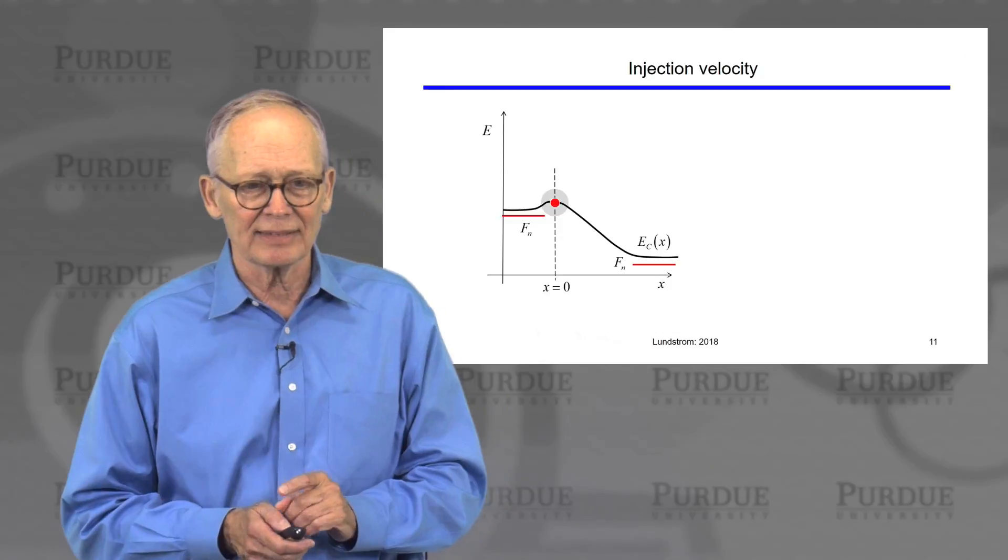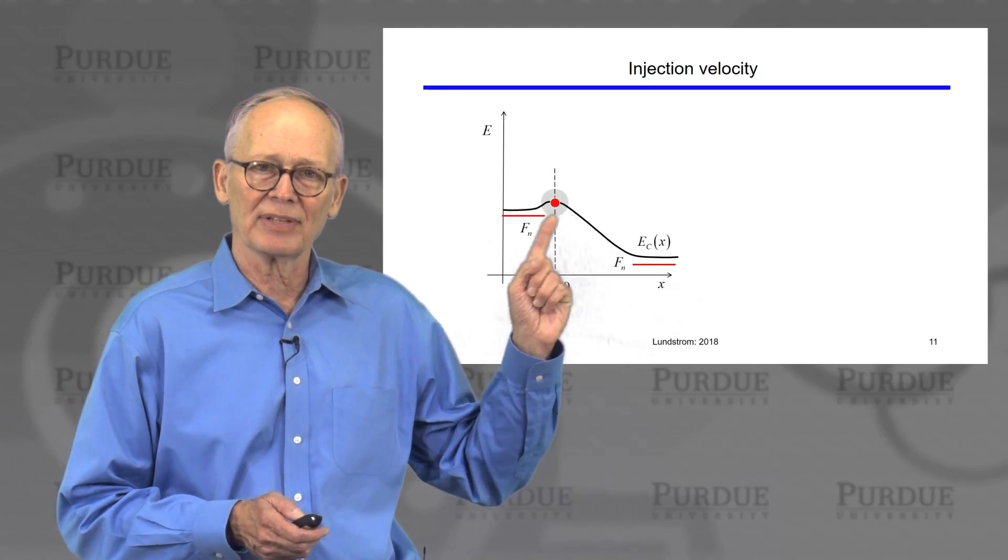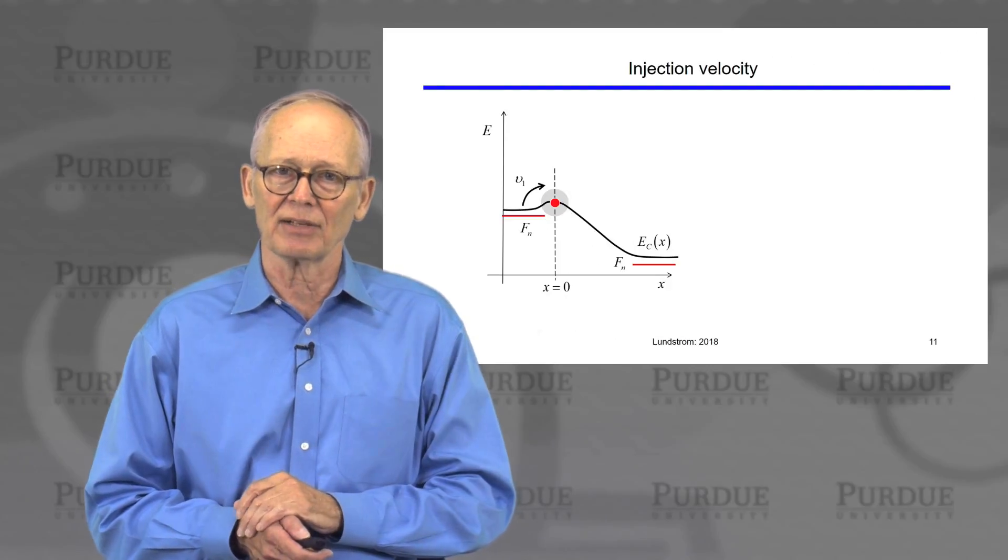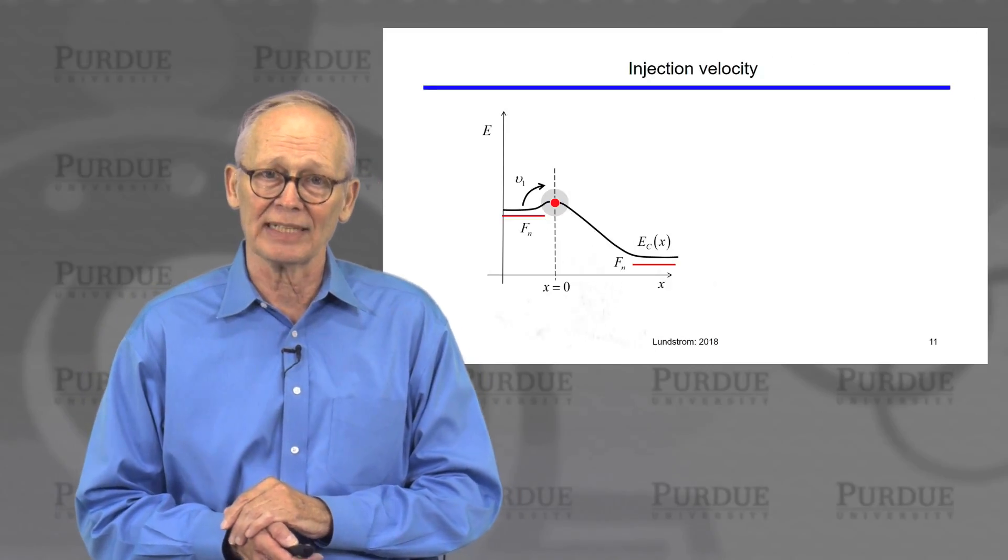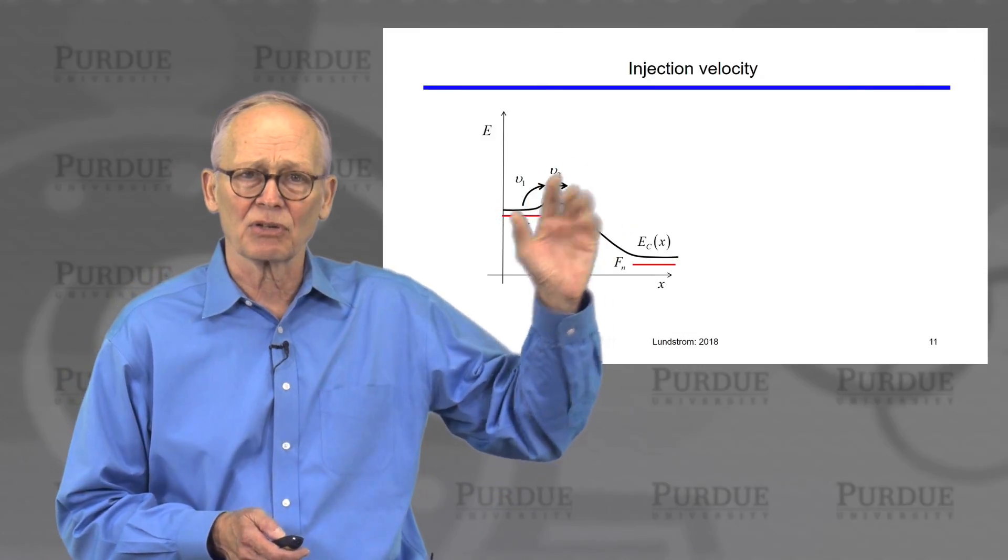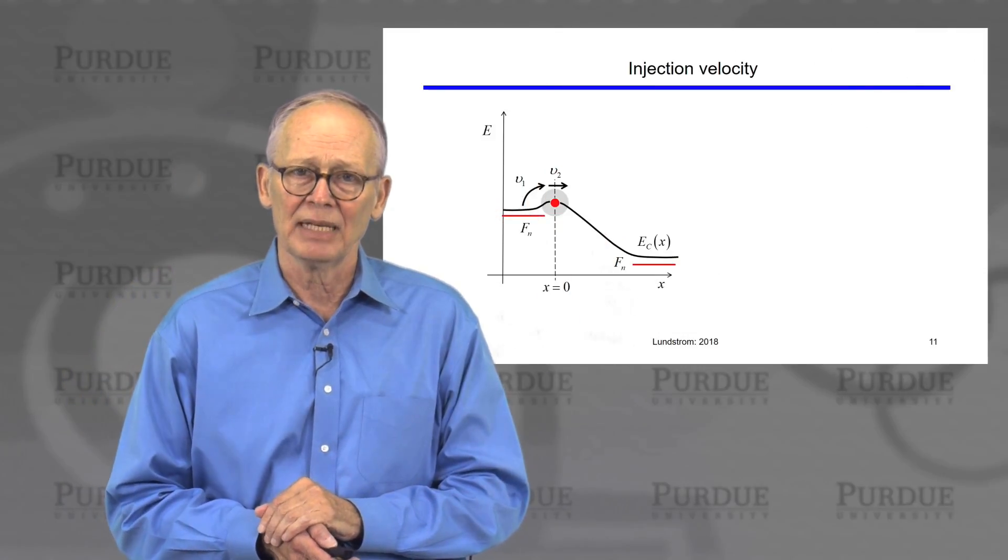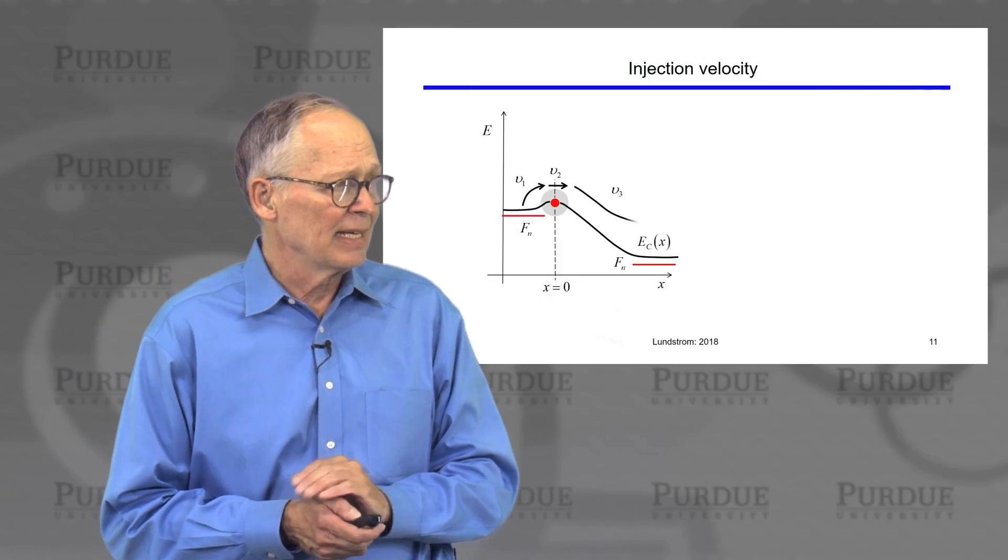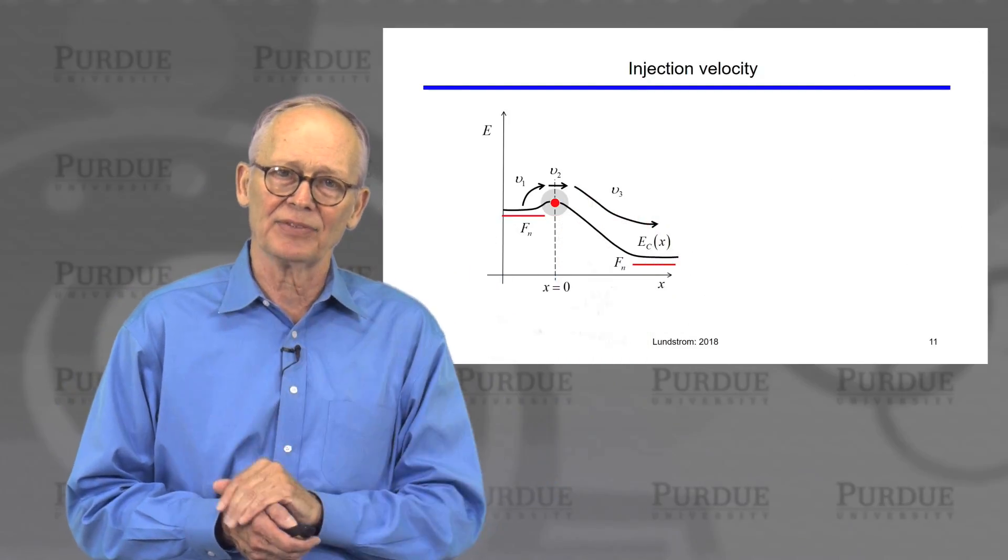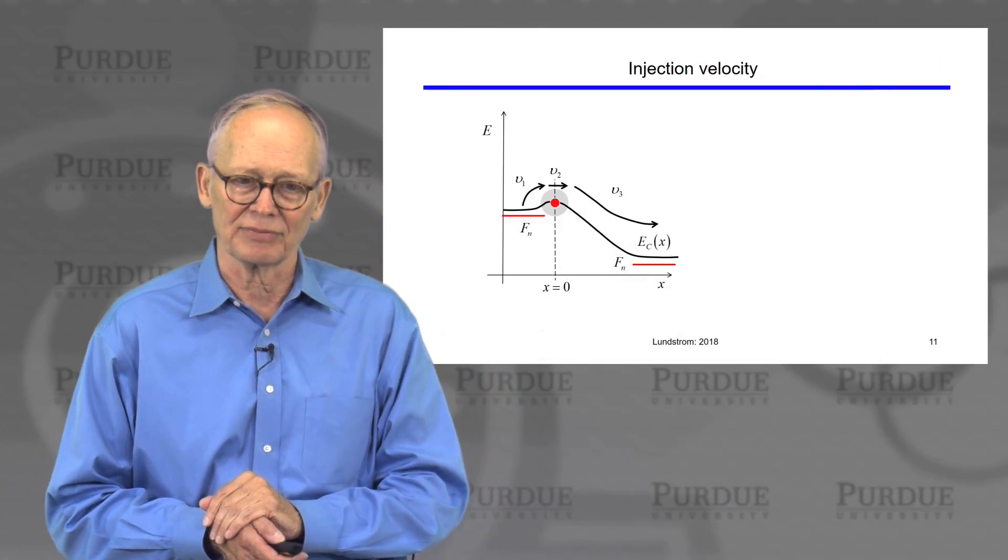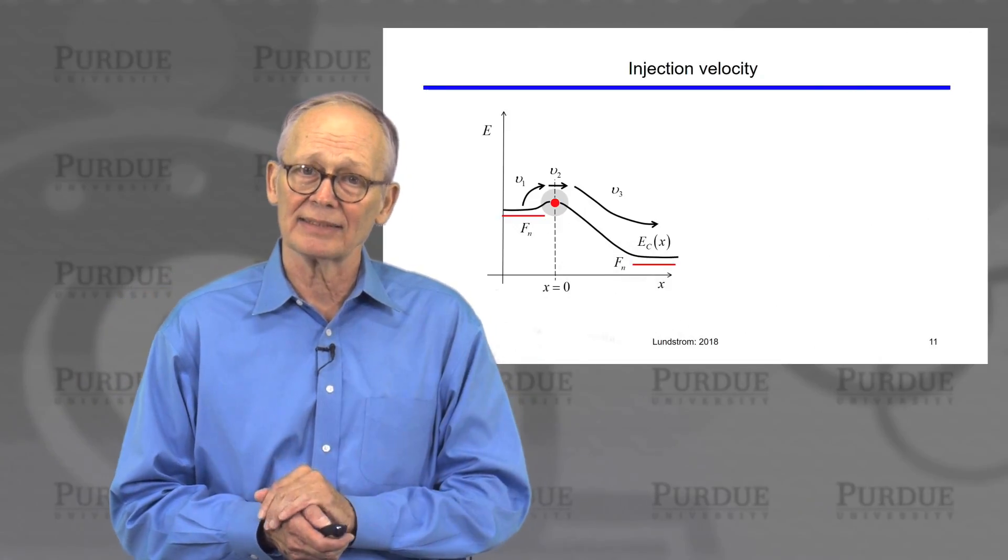So the way to think about this is that there are really three velocities involved. Electrons are injected from the source into the channel at the unidirectional thermal velocity. They're equilibrium electrons. They diffuse across this thin bottleneck regime at the diffusion velocity, D over the length of that regime. And then they get swept across the high field collector region at a very high velocity due to the strong electric field there. So there are three processes in series.